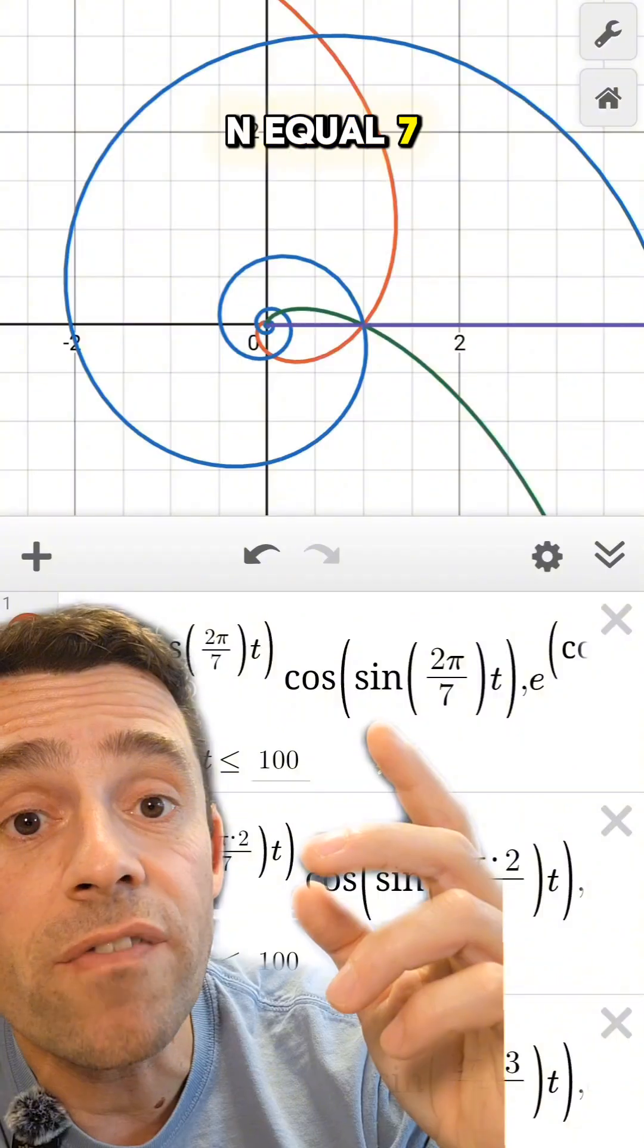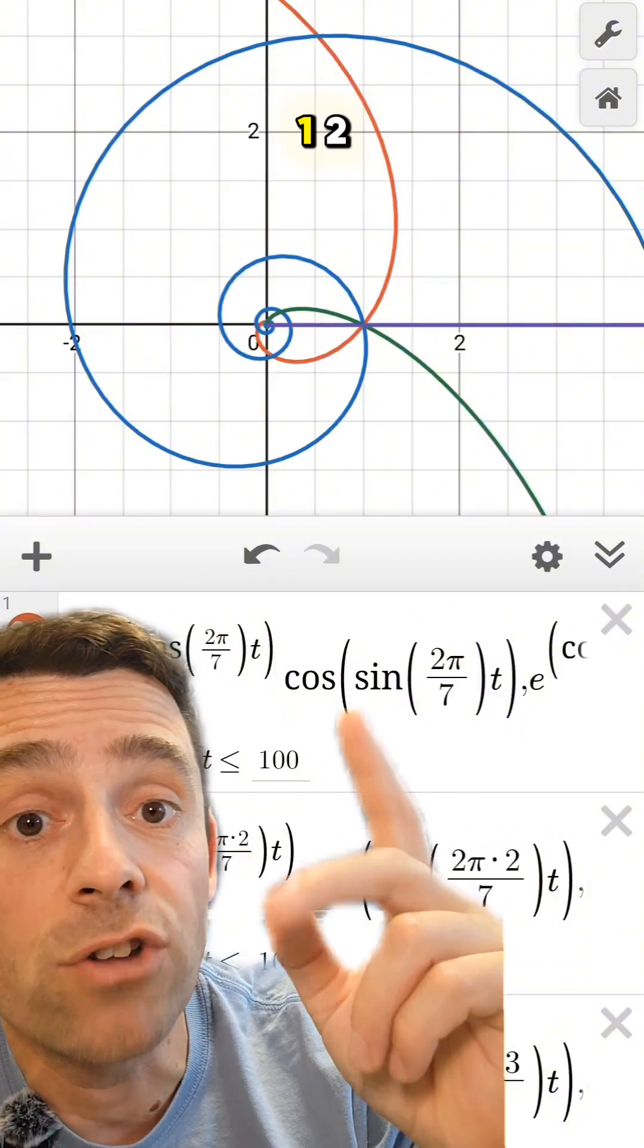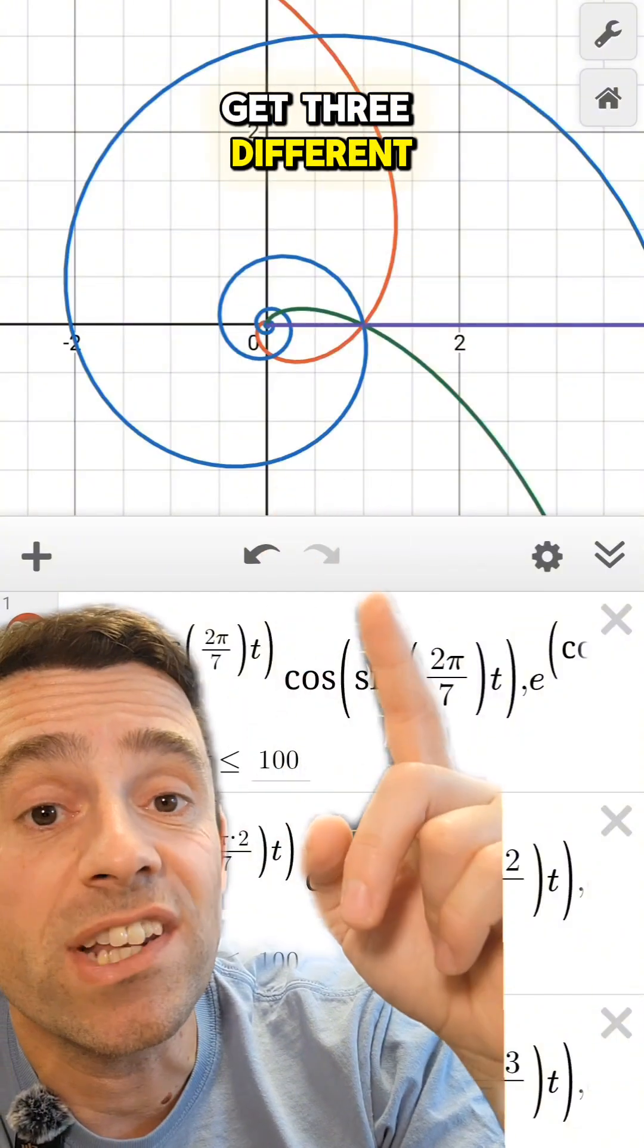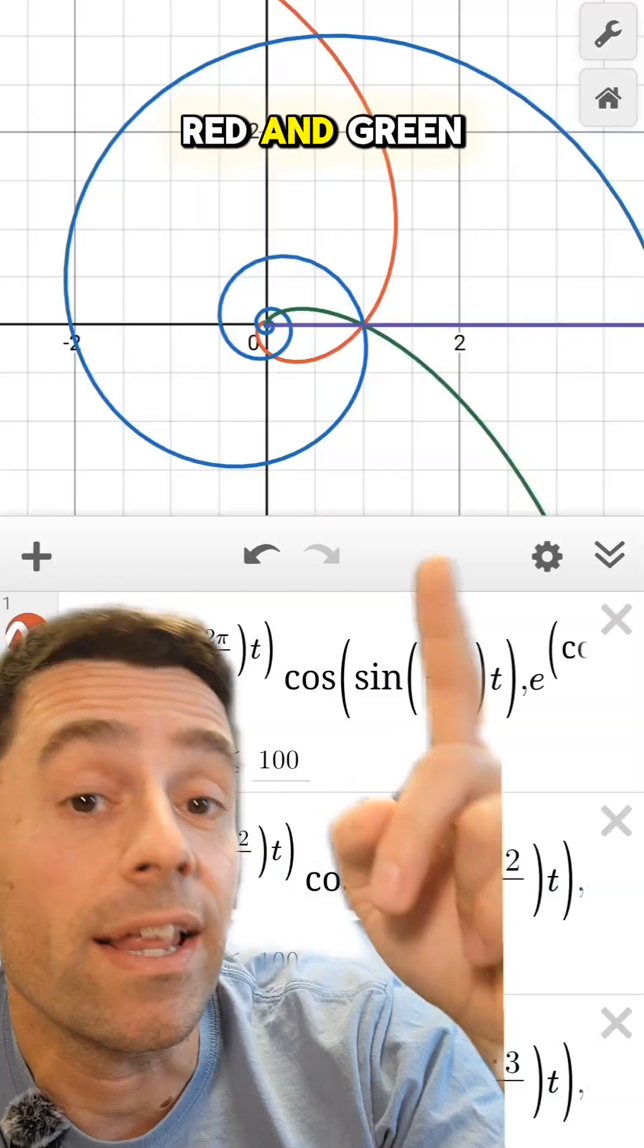And here is the case of n equals 7. For n equals 7 and k 1, 2 and 3, you get three different spirals here in blue, red and green.